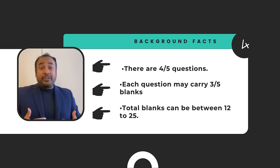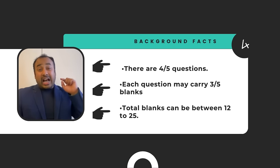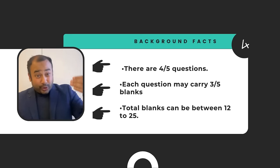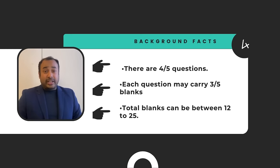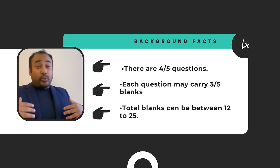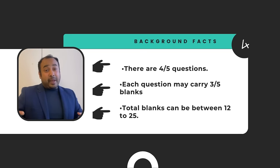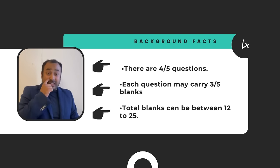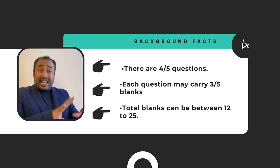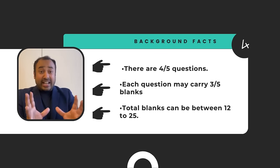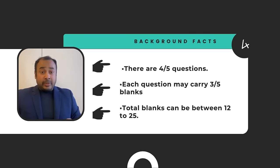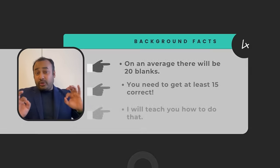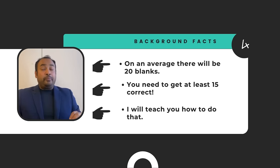If you're aiming for 65, you need 50, which is about band 6 in IELTS. But as your teacher, I want you to get at least band 7 or even band 8. Out of 20 blanks on average, you need to target getting 15 correct. That's what we're aiming for.